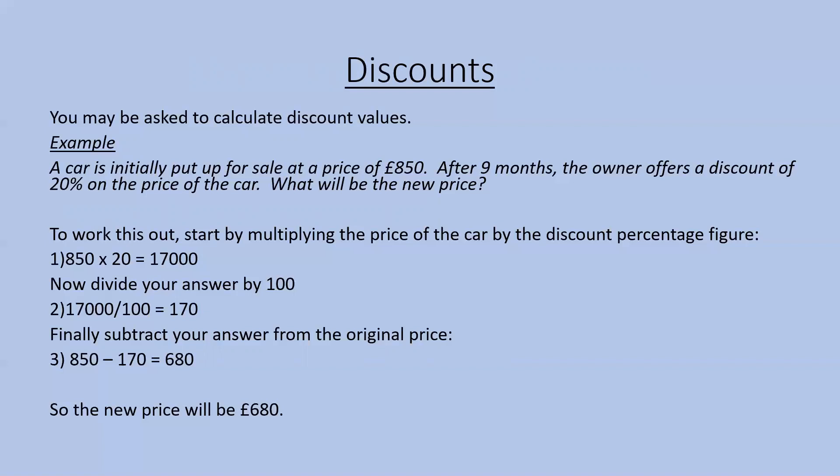We have an example: a car is initially priced at £850. After nine months, the owner offers a 20% discount. What will be the new price? First, multiply the original price by the discount percentage: £850 times 20 equals £17,000. Then divide by 100: £17,000 divided by 100 equals £170. Finally, take that £170 away from the original price: £850 minus £170 equals £680. The new price is £680.